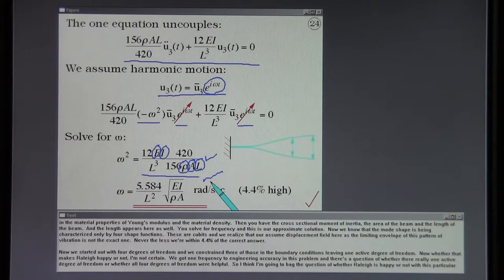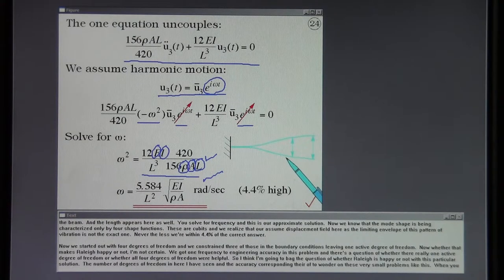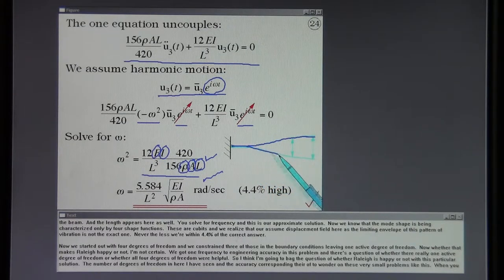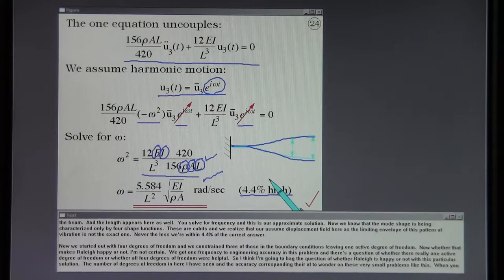Notice that you bring in the material properties of Young's modulus and material density. Then you have the cross-sectional moment of inertia, the area of the beam and the length of the beam. The length appears here as well. You solve for frequency and this is our approximate solution. Now we know that the mode shape is being characterized only by four shape functions. These are cubics and we realize that our assumed displacement field here as the limiting envelope of this pattern of vibration is not the exact one.